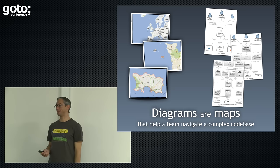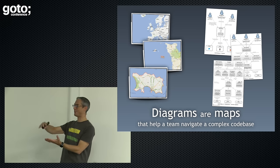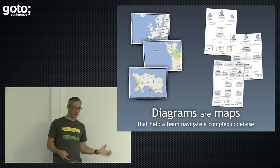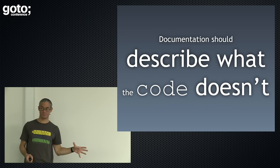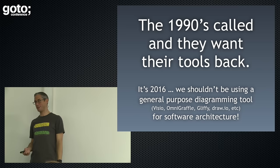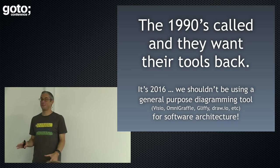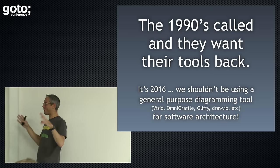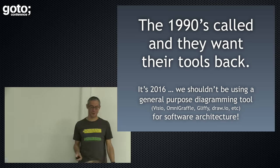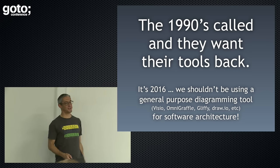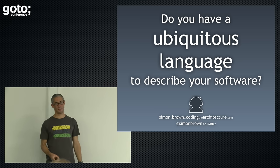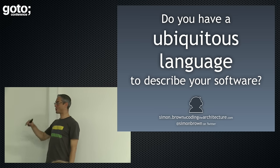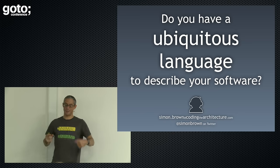My summary: diagrams are maps. Treat your software architecture diagrams as a set of simple maps that describe your code at different levels of abstraction. Any documentation you create should describe what the code doesn't — it's as simple as that. Stop using Visio. Stop manually drawing boxes and lines to describe software architecture. All of the tooling aside, my final closing comment is very simple: whenever you're describing software, make sure your team has a ubiquitous language to do so. That's me — thank you very much.